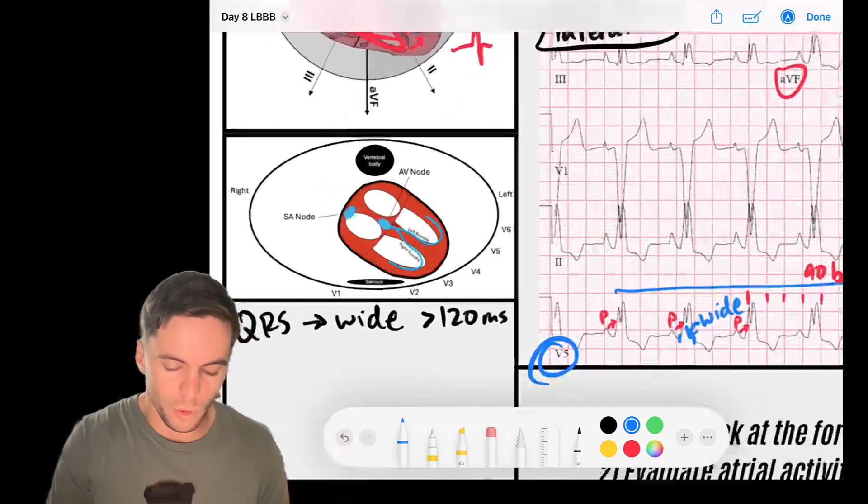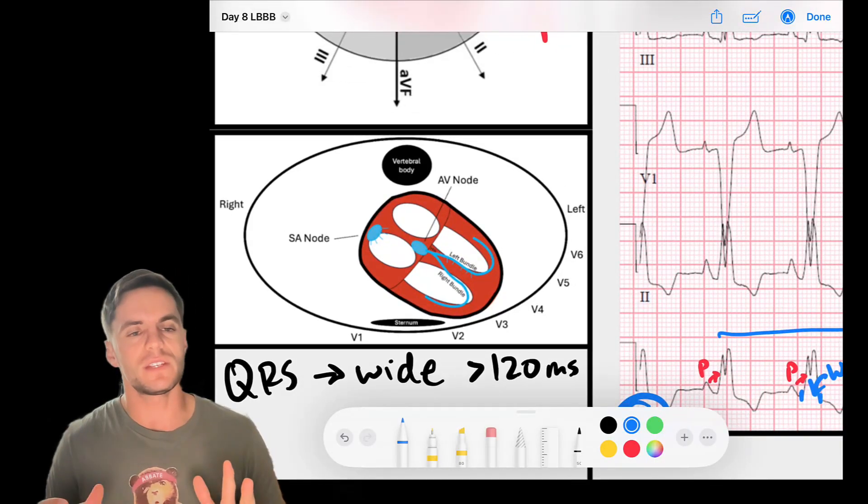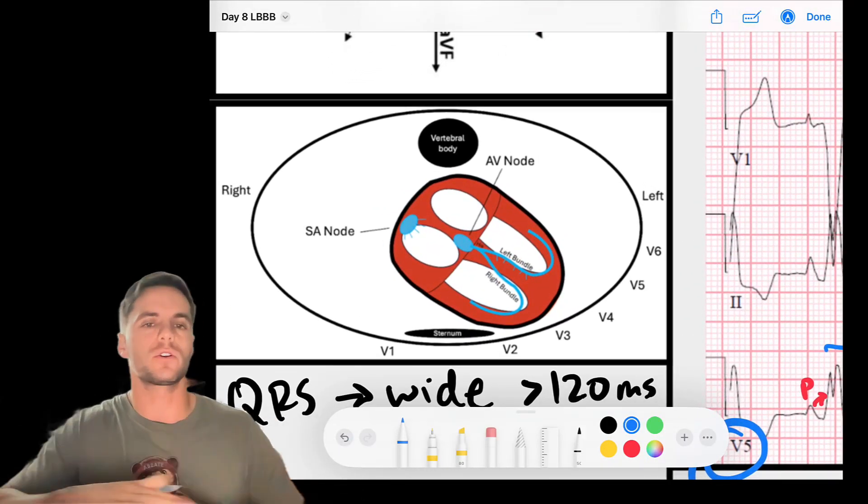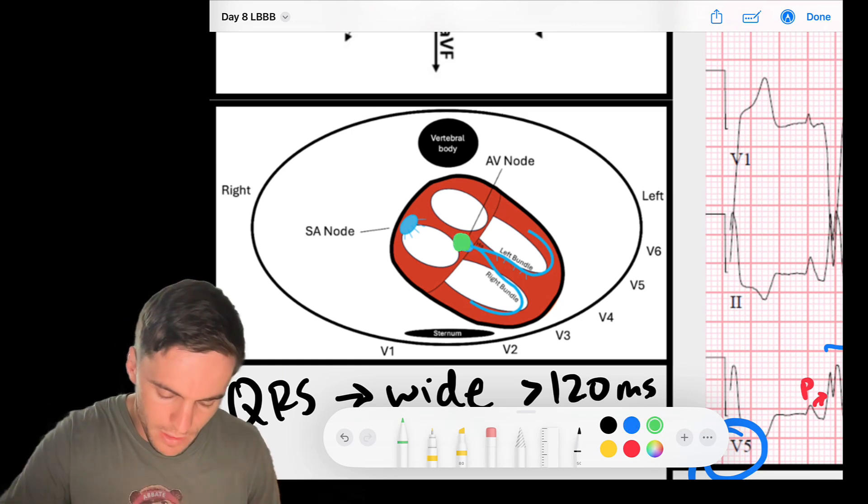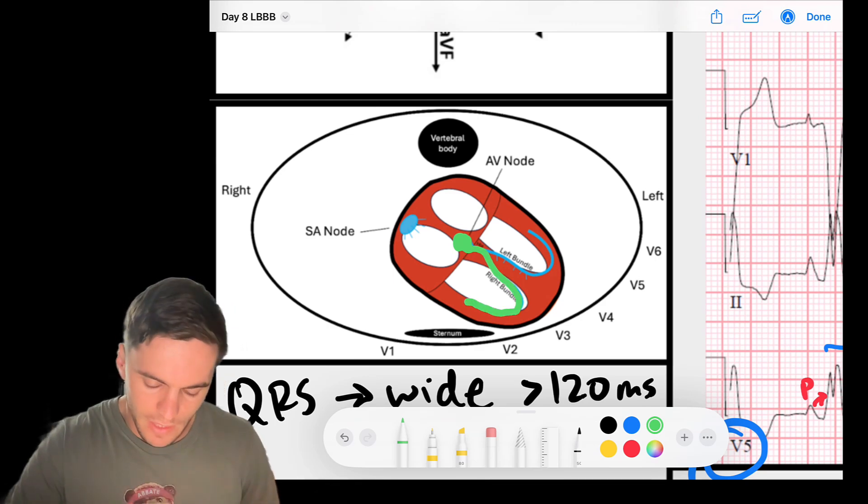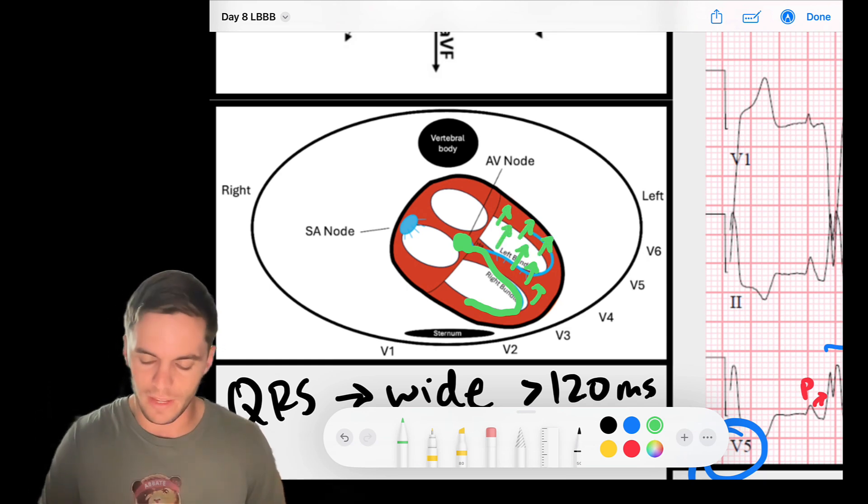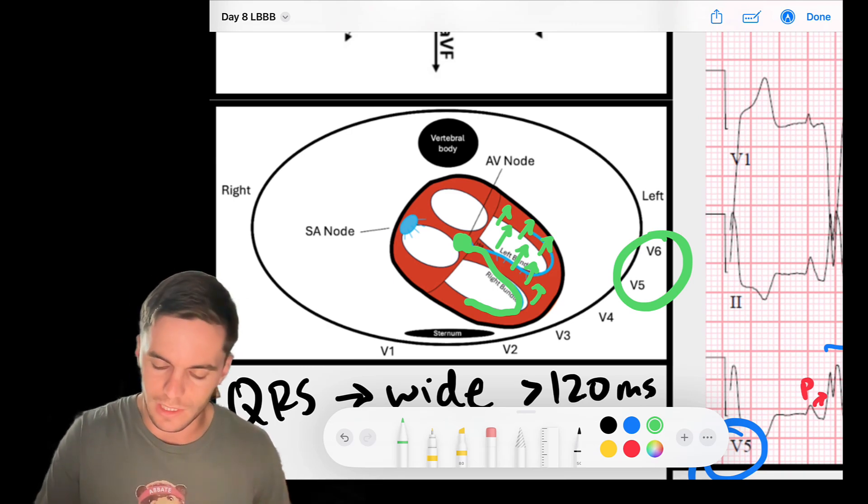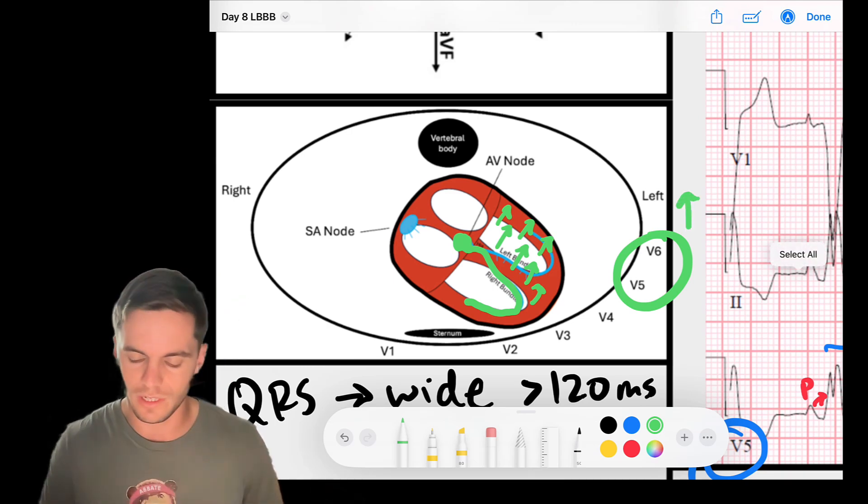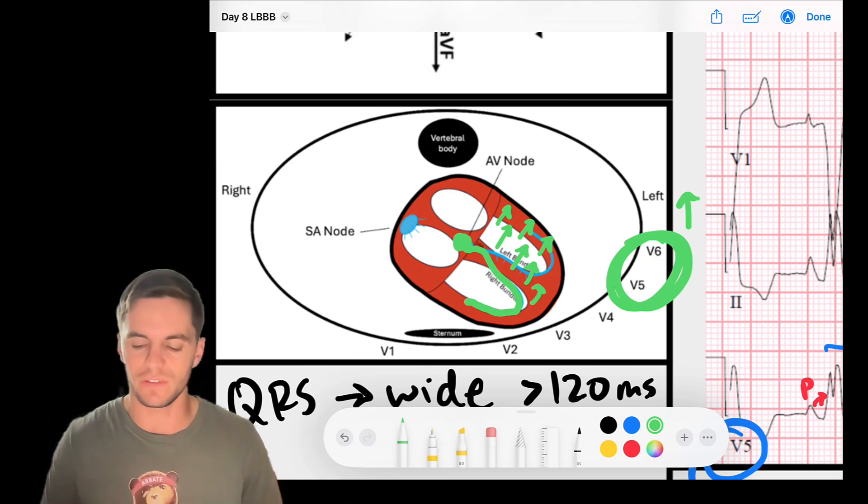Now remember our precordial leads, leads V1 through V6. If I look here, this is more of a transverse plane across our chest wall. Remember that the same thing is going to happen. We're going to have signal coming from the AV node, it's going to pass nicely down the right bundle. And then it's going to have to slowly, cell to cell, head to the left. Well, what are our lateral forces on the left? V5 and V6. So we should also expect late positive forces in V5 and V6, very similar to leads 1 and AVL.